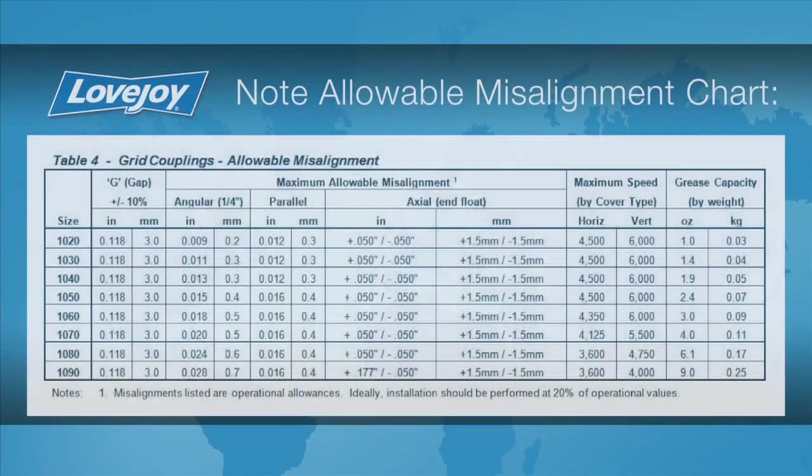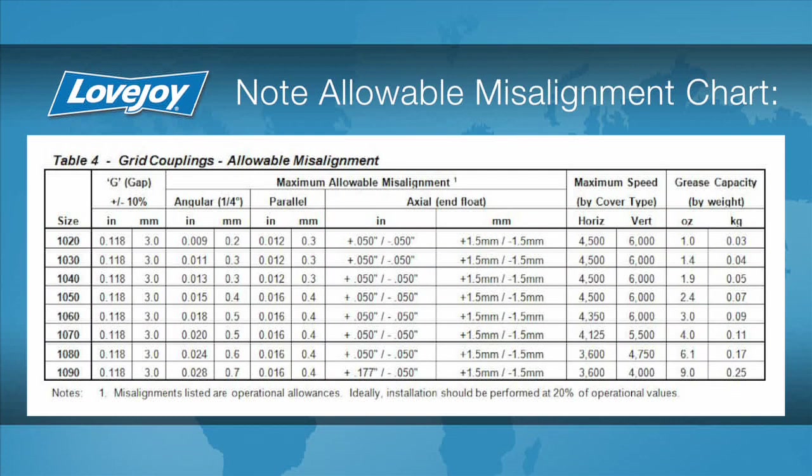The angular and parallel alignment of the equipment shafts is critical to the life and performance of the grid-style coupling. The maximum angular misalignment is only a quarter of a degree, and the maximum parallel misalignment is listed in the installation guide.